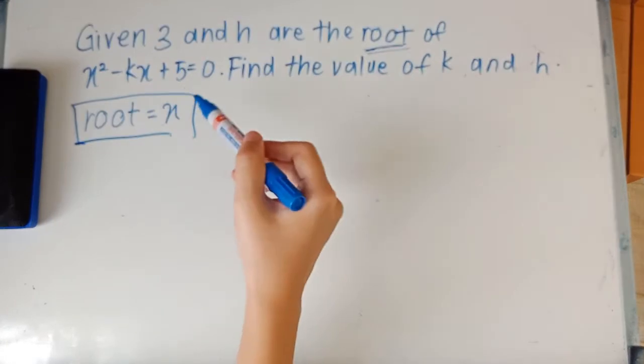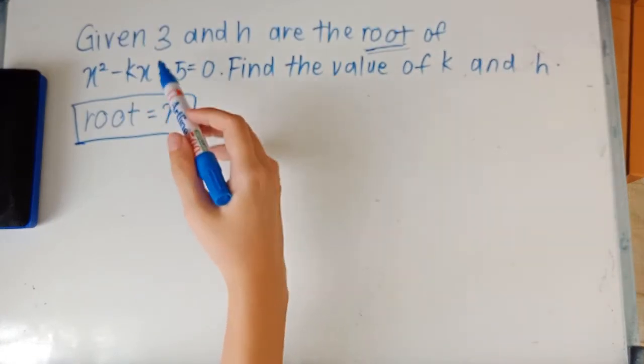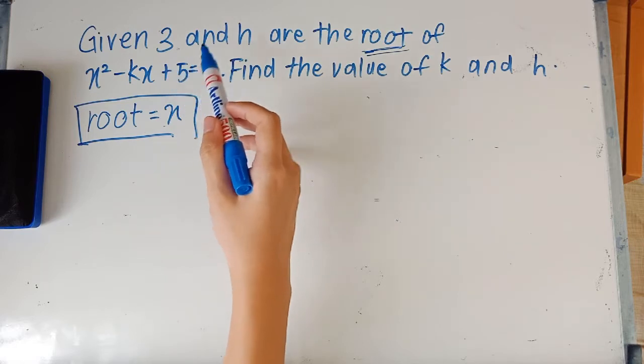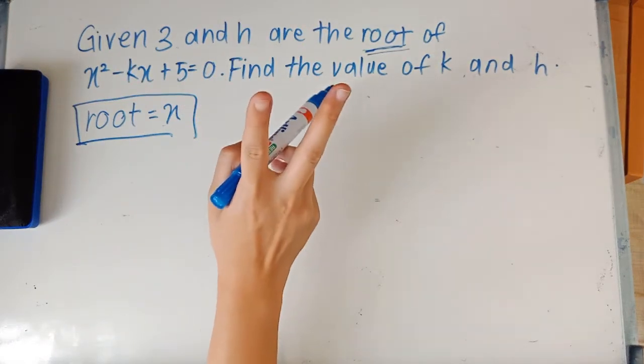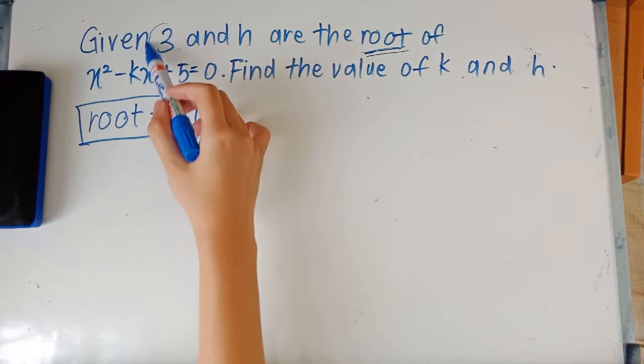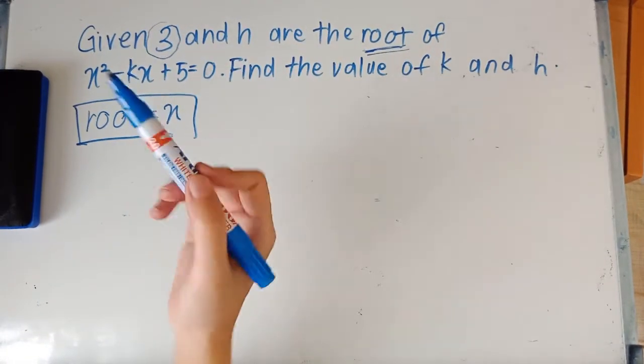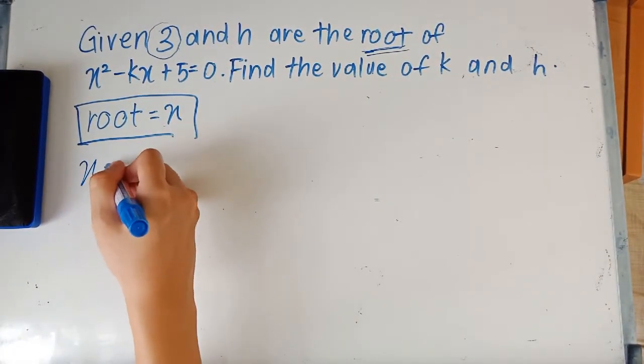So if you know this, you would know that the first thing that you want to do here is to substitute x = 3 into the equation because we have two roots in this equation and one is a number.